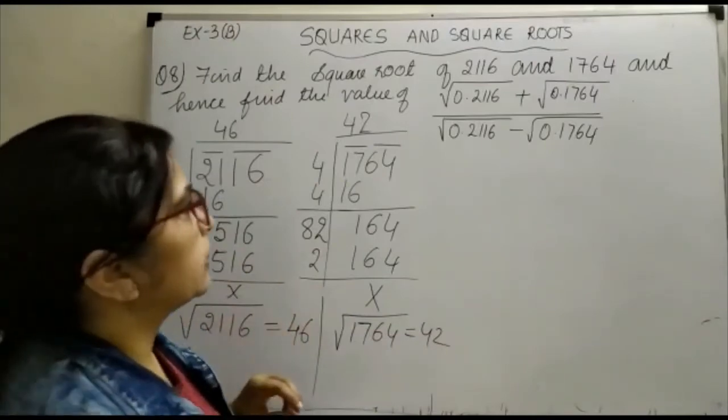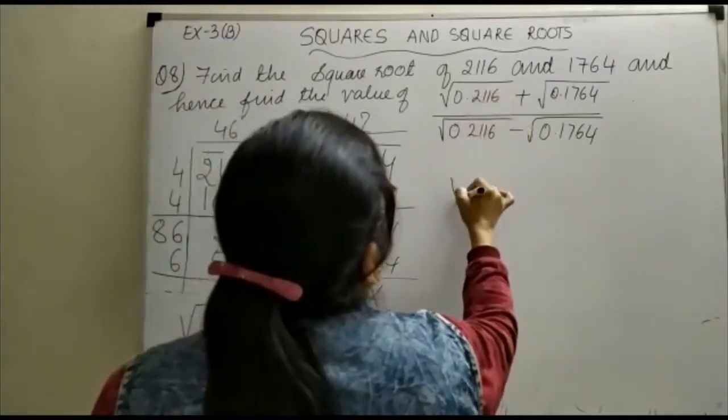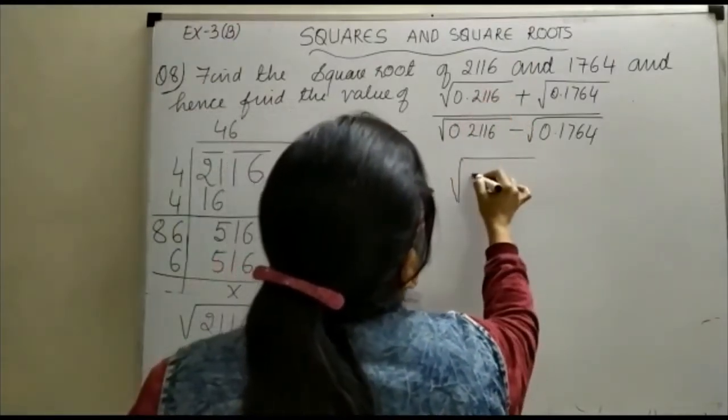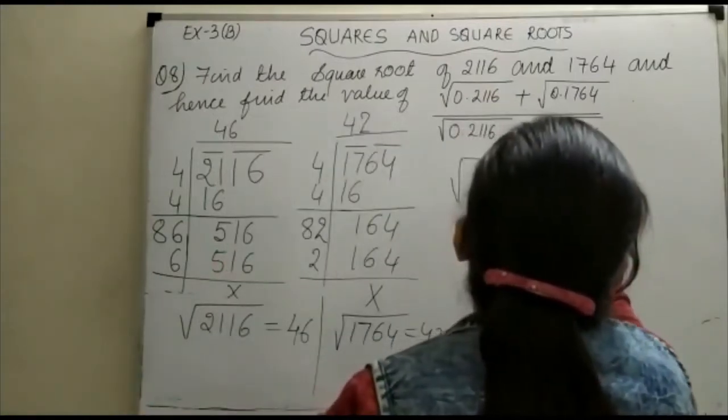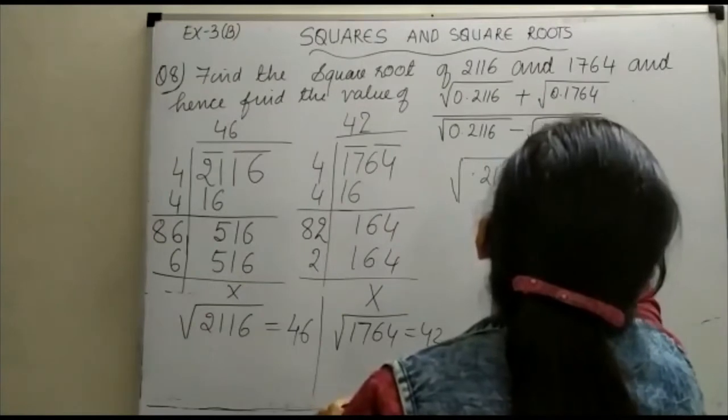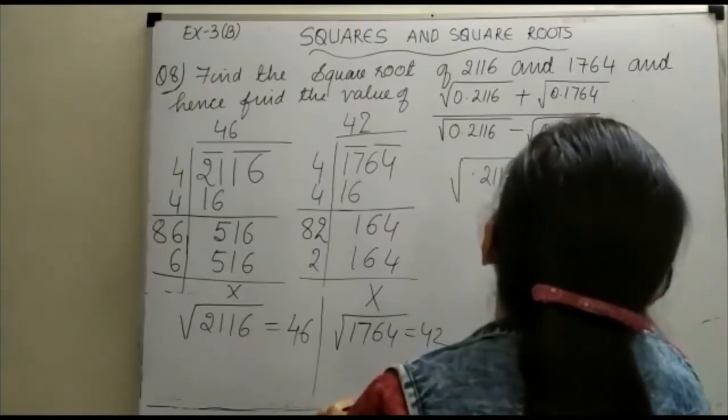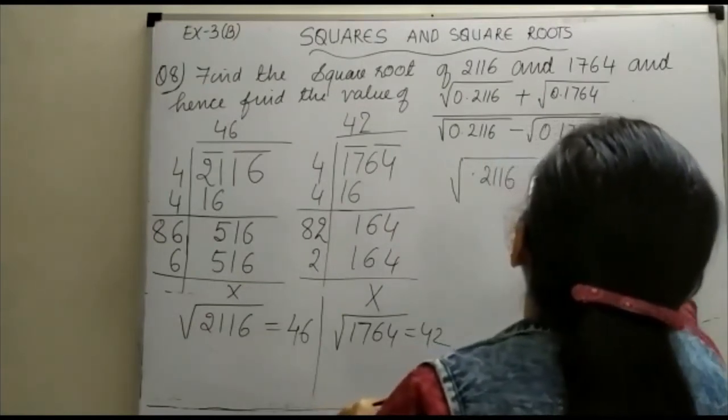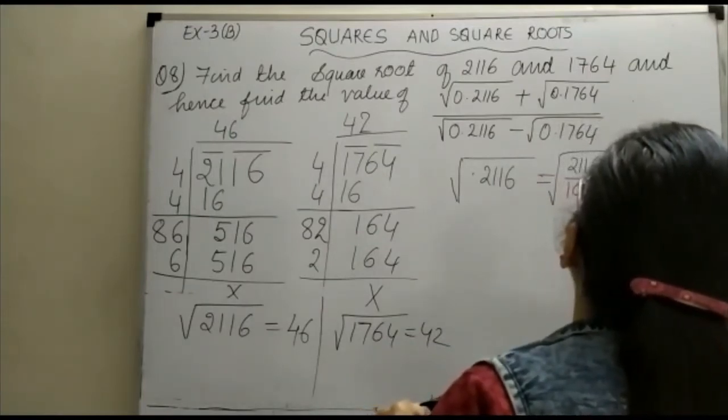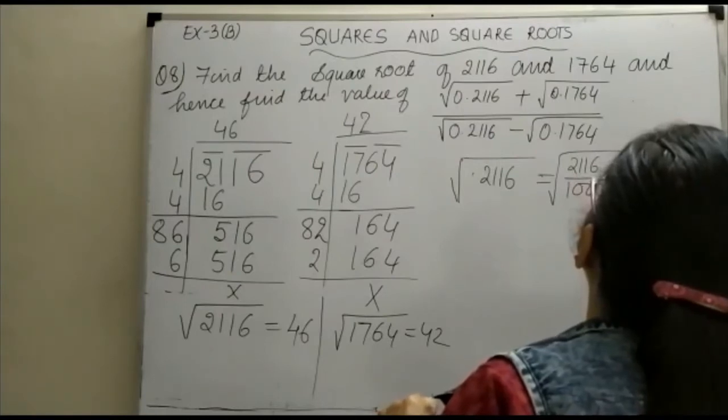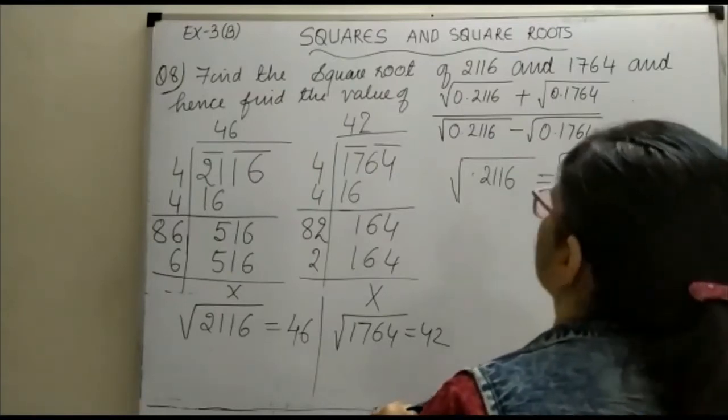उसके बाद आप देखिए, हम लोग जब आपको यह निकालना है: 0.2116. यह आपका हो जाएगा 2116 upon 10,000, which will be equal to 46 upon 100, and this is equal to 0.46.